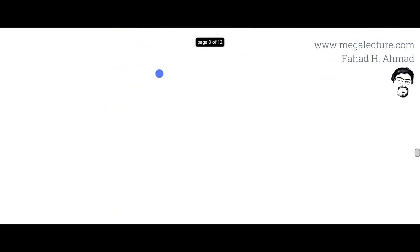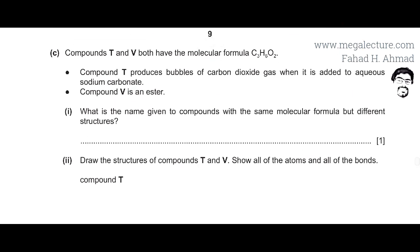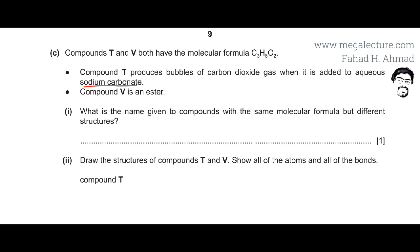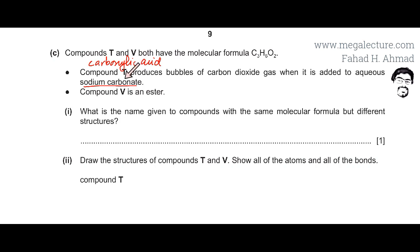Moving to the next part, compounds T and V both have the same molecular formula C3H6O2. Compound T produces bubbles of carbon dioxide gas when added to aqueous sodium carbonate. Since acids react with carbonates, compound T must be an acid. In organic chemistry at O-level, the only acid studied is carboxylic acid, so compound T must be a carboxylic acid.